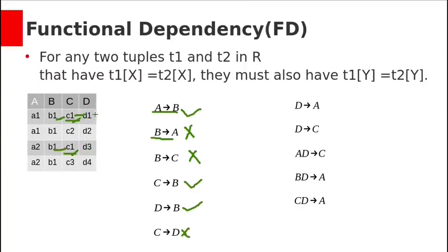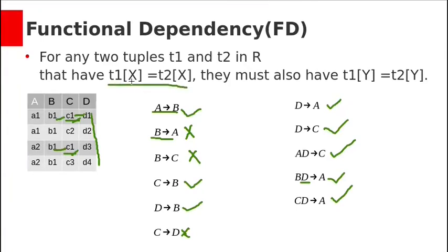D→A is valid because all D values are different. D→C is also valid. AD→C is also valid because D is included and has all different values. In general, if we have two rows with the same value for a set of attributes X, then those two rows must have the same values for attribute set Y. If so, X→Y is a valid functional dependency.